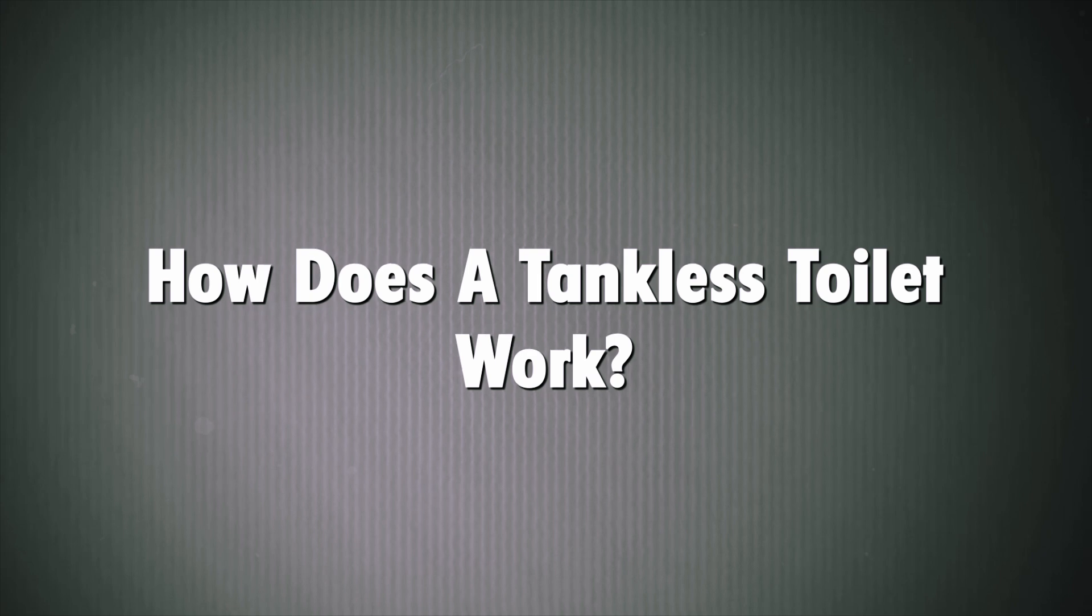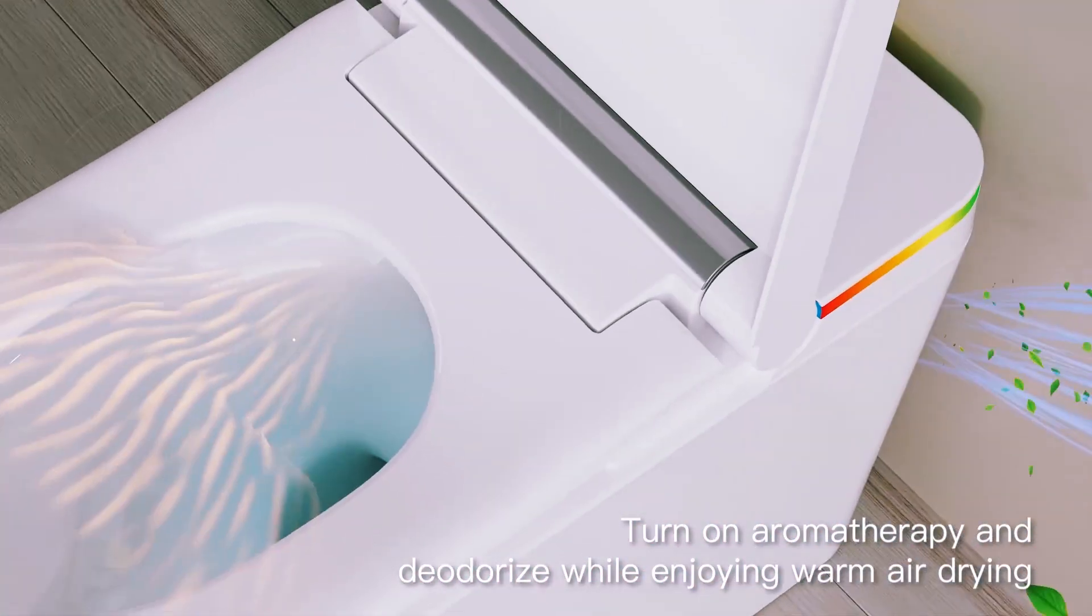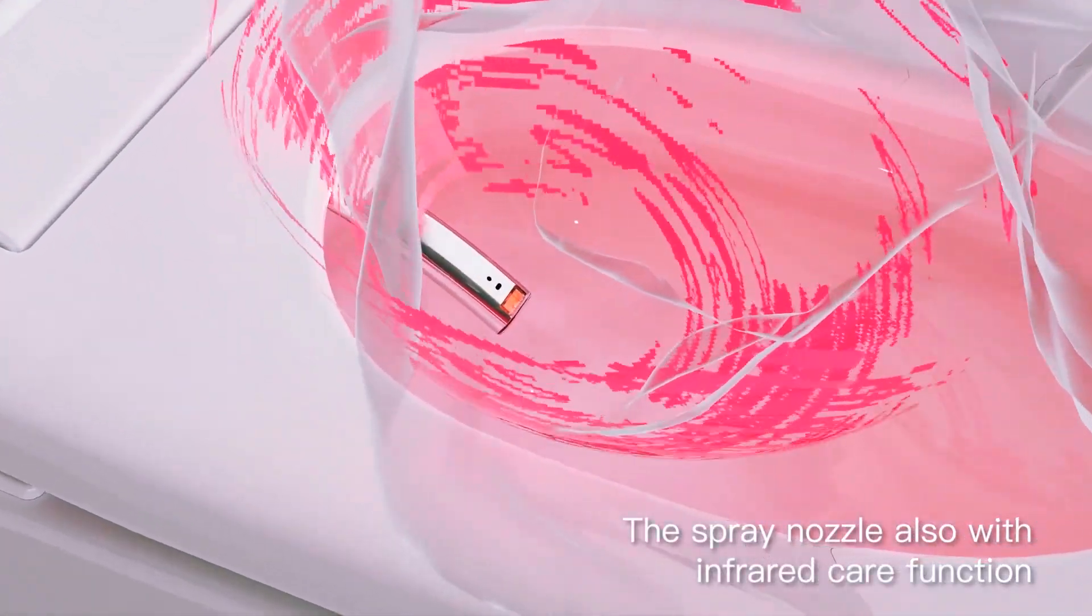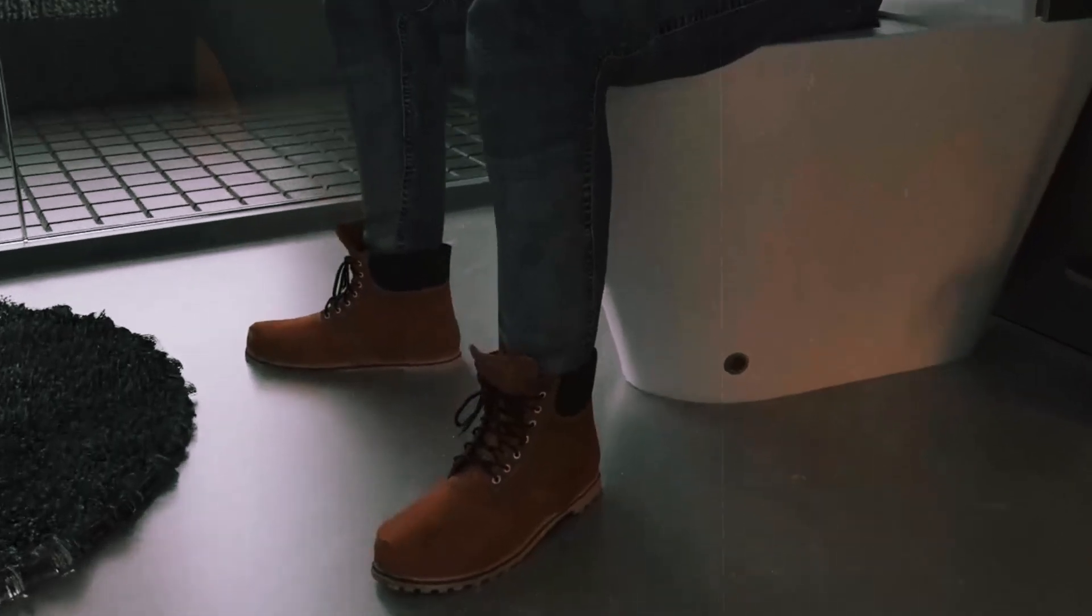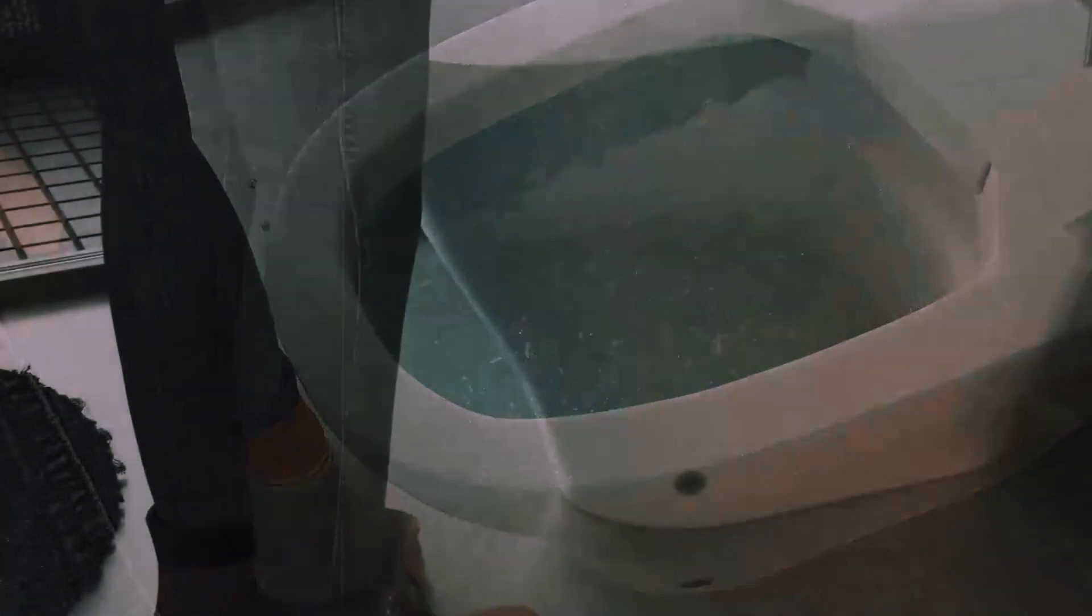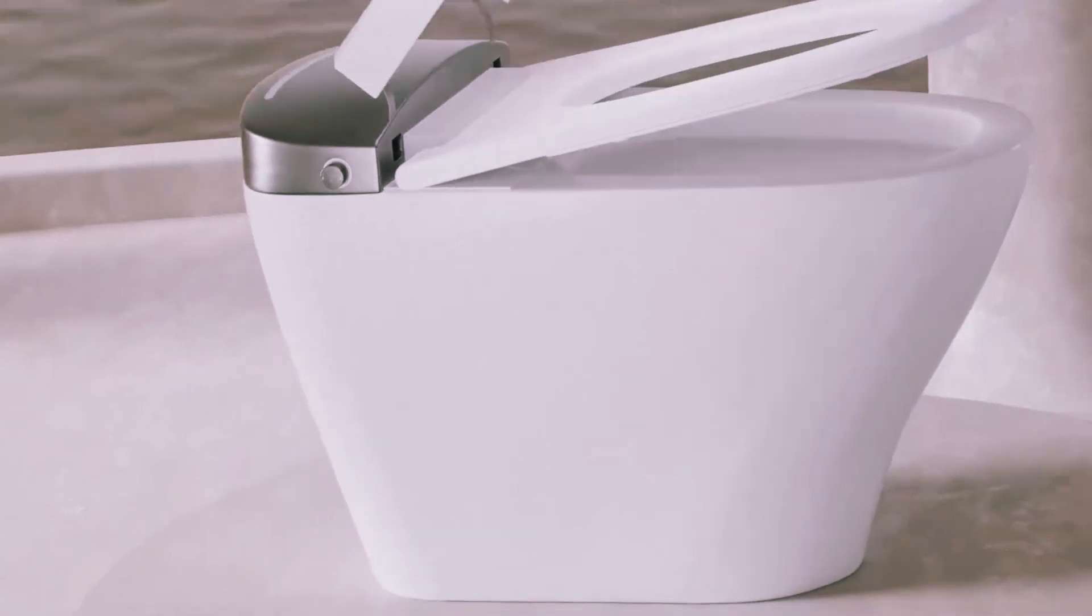How does a tankless toilet work? So how do these space-saving wonders actually work? The secret lies in the flush valve, also known as the flushometer. Instead of waiting for a tank to fill, a tankless toilet uses pressurized water directly from your plumbing system. When you flush, it releases a strong burst of water that efficiently clears the bowl.